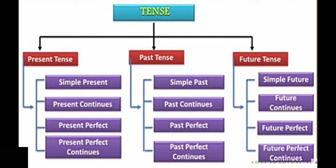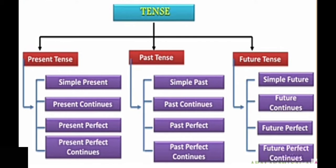Totally there are twelve tenses. Let us study in detail one by one. First, simple present tense. Simple present tense is in the form of SPO pattern — subject, verb, object. In simple present tense, V1 form is used.